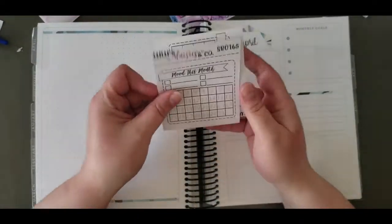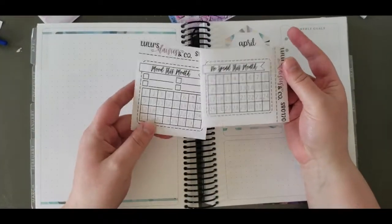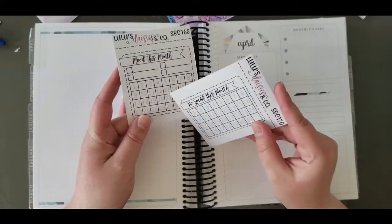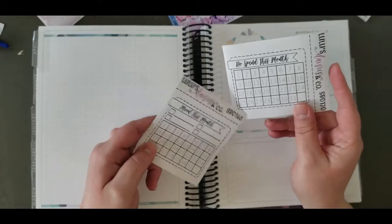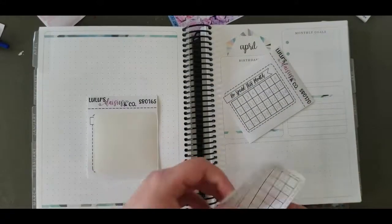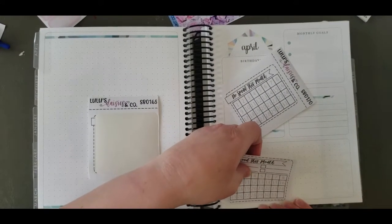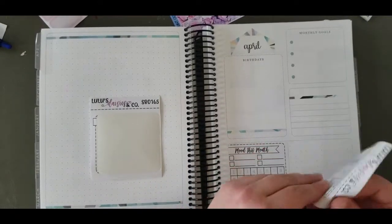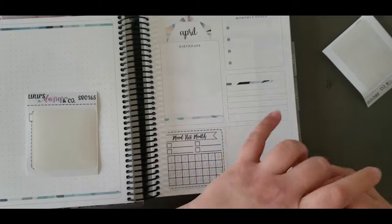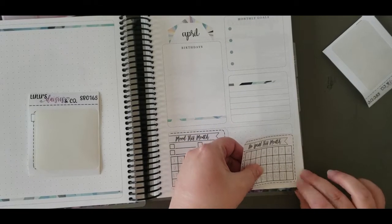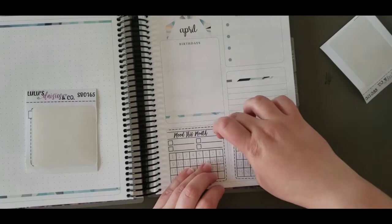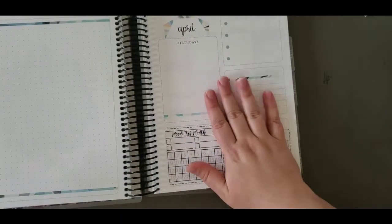So the first thing I'm going to do is I'm going to put my two monthly trackers in. These are from Lulu Daisies & Co. This is the Mood in a Month and the No Spend This Month trackers. And I find that these fit perfectly. These two put together in this little dot grid box at the bottom, and that's crooked, but it's too late. So there are those.